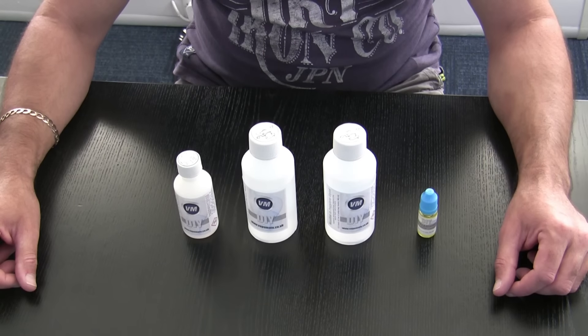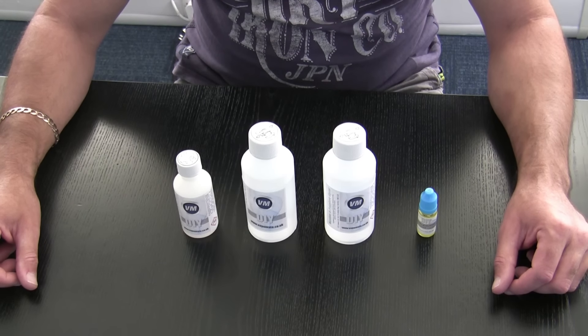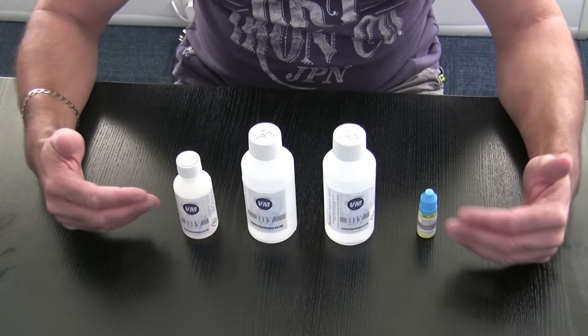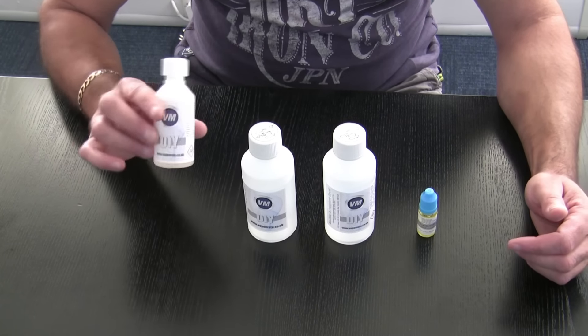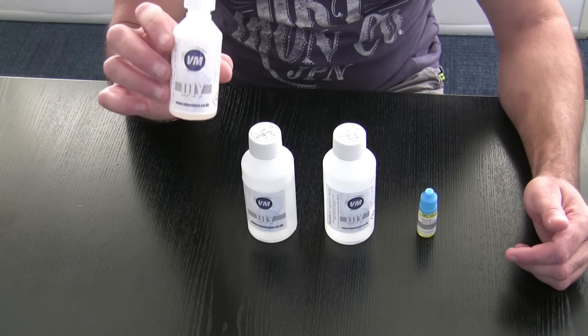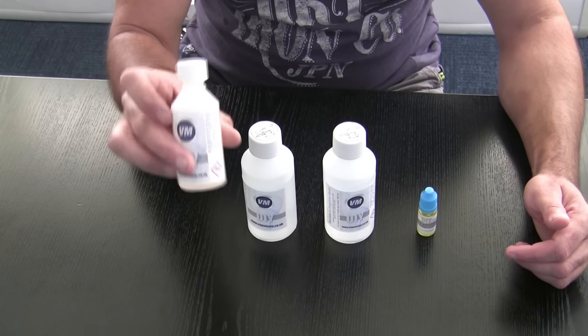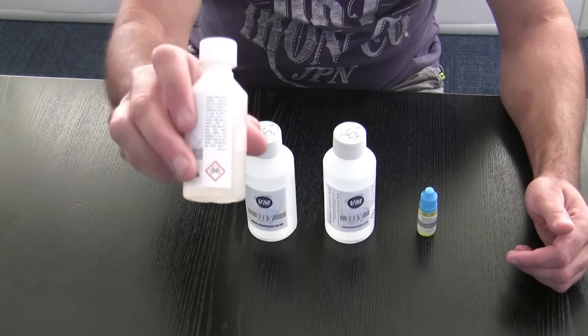Now we're down on the desk, we're going to do a bit of mixing. All the ingredients are already here and available on the Vape Mate website. We have this is your nicotine, PG nicotine. Got a little label on the side there.